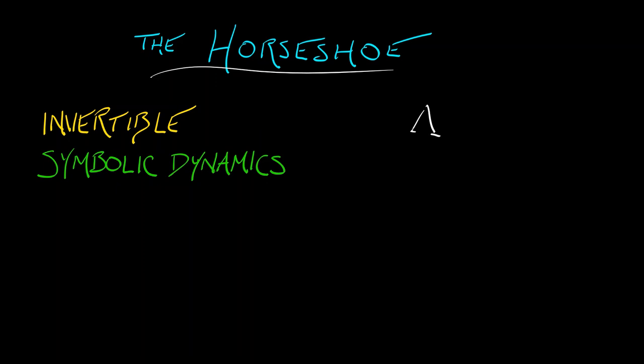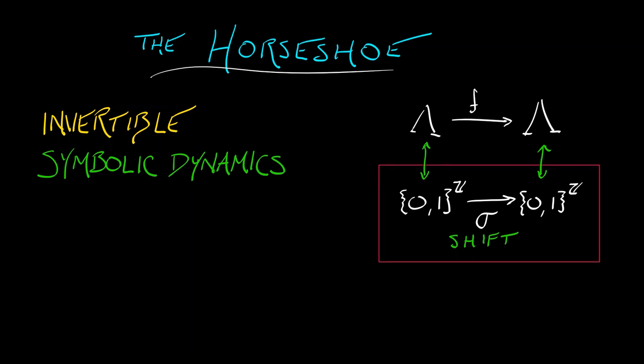So if I look at the action of the horseshoe map F on its invariant set lambda, then I can get a correspondence or a topological conjugacy between that and the shift map on the space of bi-infinite symbol sequences in zeros and ones. Now, such a system, such a symbolic dynamics is called a full shift on two symbols.